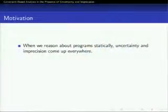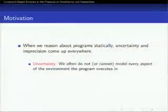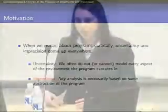This talk is about constraint-based analysis in the presence of uncertainty and imprecision, and this is joint work with Tom, who will give the second half of this talk, and also our advisor, Alex Aiken. When we try to reason about programs statically, it would be great if we had perfect knowledge about the world, but unfortunately, uncertainty and imprecision come up all the time. Uncertainty comes up because we cannot model every aspect of the environment that a program executes in, and imprecision comes up because any program verification technique is necessarily based on some sort of abstraction of the program.